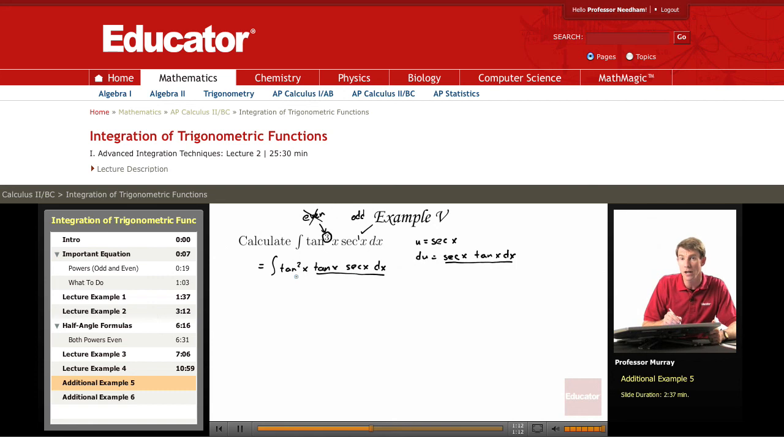The tangent squared x, we need to convert that into secants. And since we have an even number of tangents, we can do that. Remember, our old Pythagorean identity, tangent squared x plus 1 equals secant squared x. And so the tangent squared x converts into secant squared x minus 1.